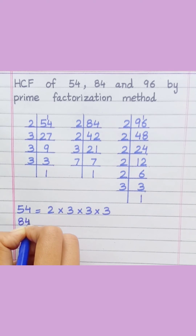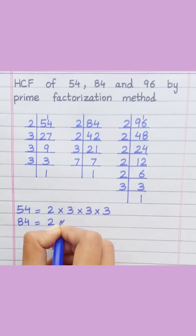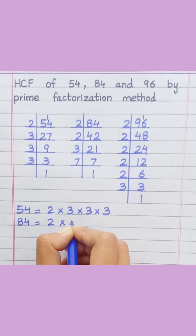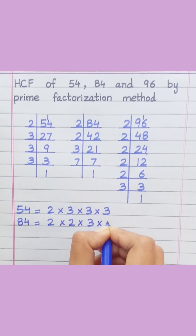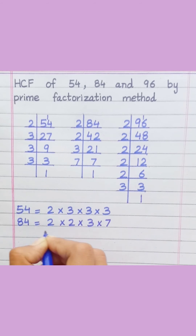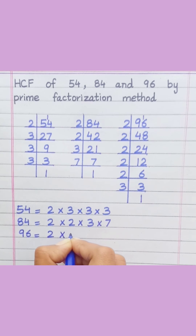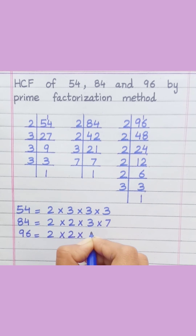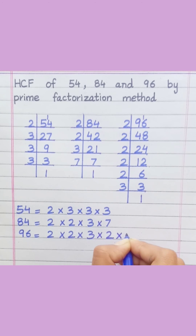84 equals... 96 equals 2 multiply 2 multiply 3 multiply 2 multiply 2 multiply 2.